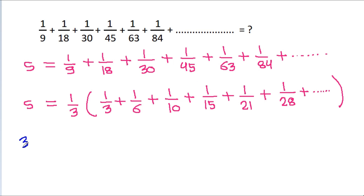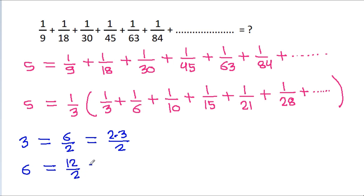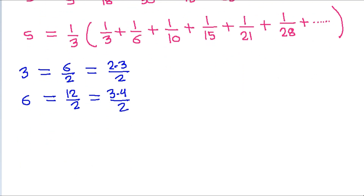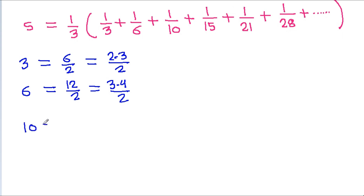And 3 is equal to 6 by 2, that is equal to 2 times 3 by 2. 6 is equal to 12 by 2, that is equal to 3 times 4 by 2. 10 is equal to 20 by 2, that is equal to 4 times 5 by 2, and so on.